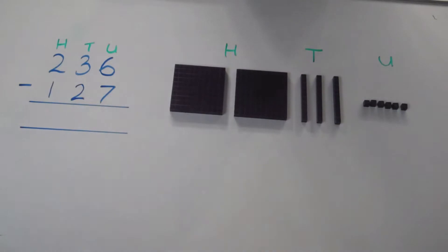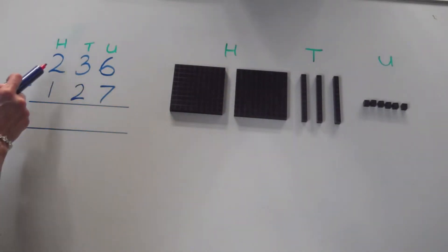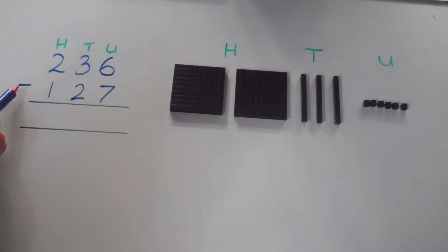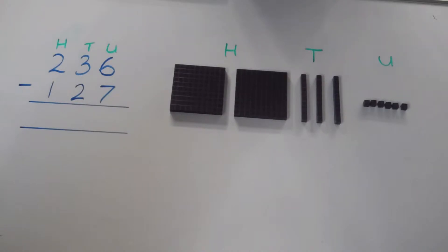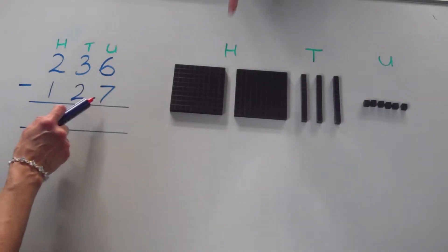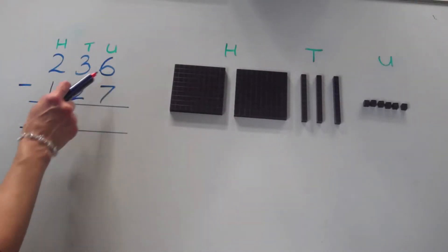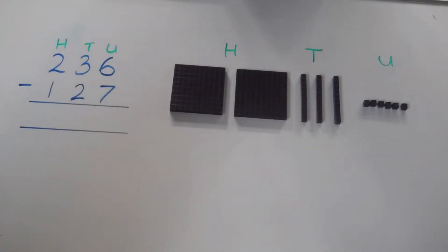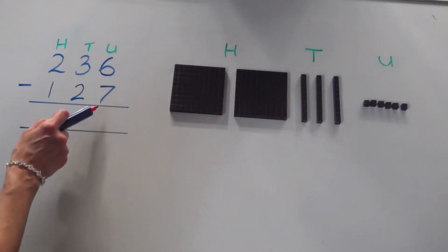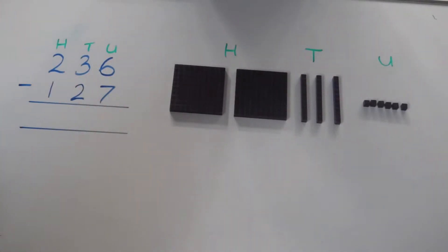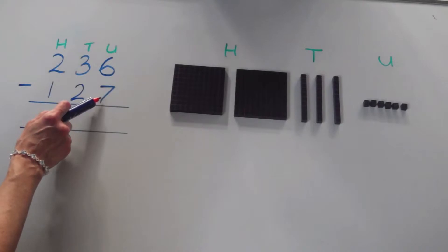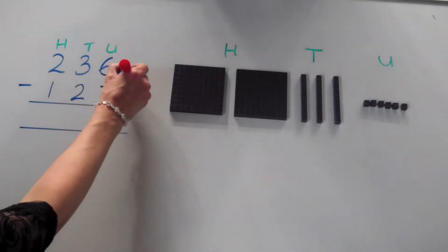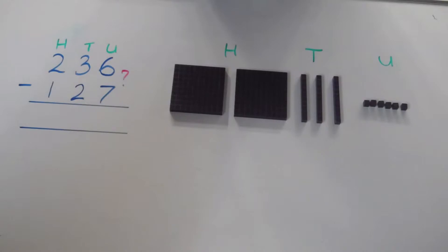Our next calculation is 236 subtract 127, so we have to take away 127 from 236. As last time, let's begin with the units column. We have got 6 units and we need to take away 7 units. How can we take away 7 from 6? We haven't got enough.